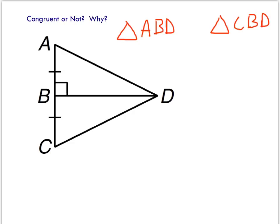These tick marks right here show me that AB and CB are congruent. Also, I've got a right angle right in there. And if that's a right angle, this angle and that angle are both right angles because we've got perpendicular lines. Perpendicular lines make right angles, and right angles are always congruent to each other.